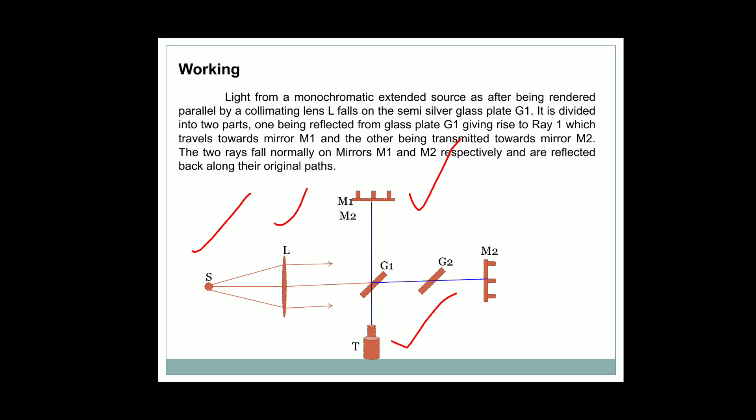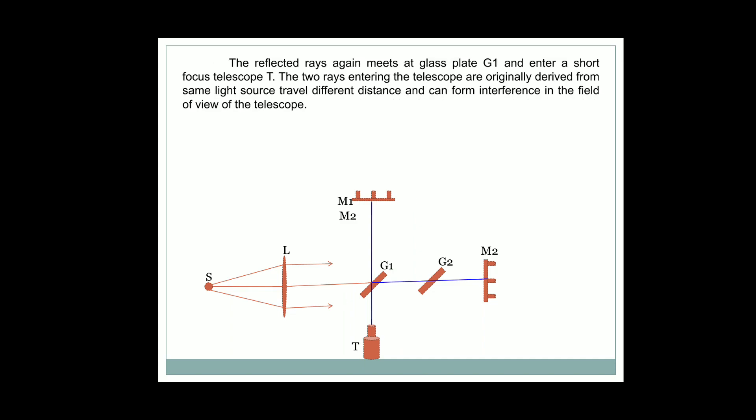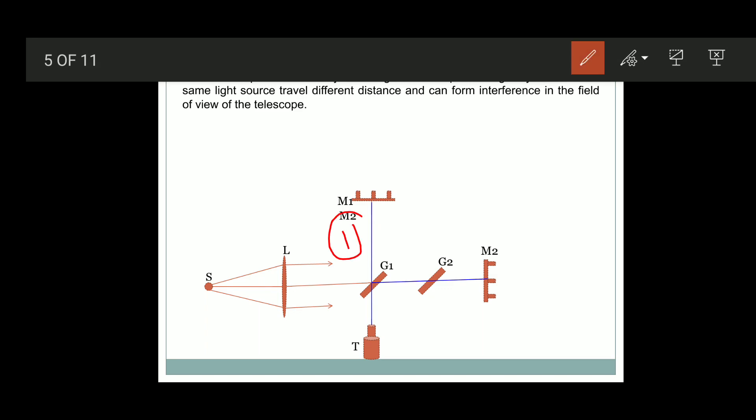Glass plate G2 is called the compensating plate. Reflected ray 1 travels through glass plate G1 twice, because the ray is reflected at the bottom of the glass plate — it passes through the glass once going in and once coming out.